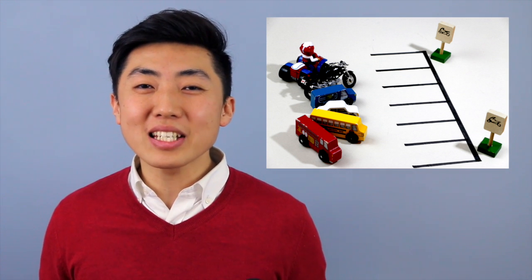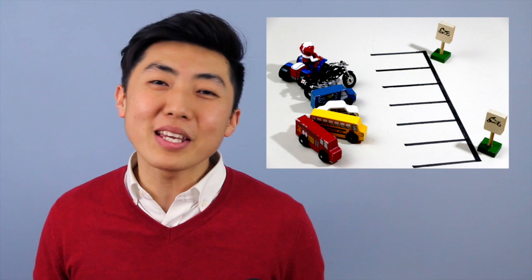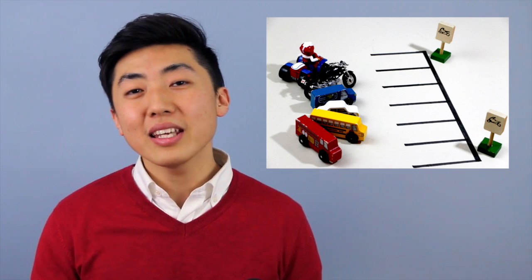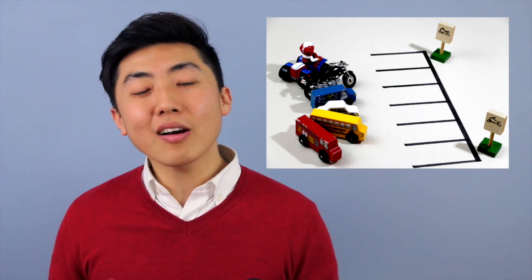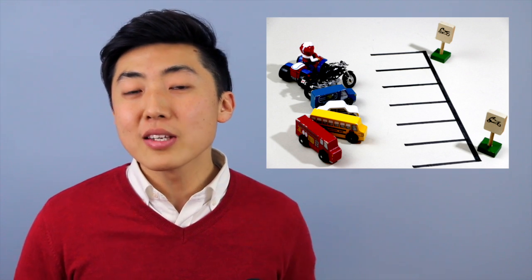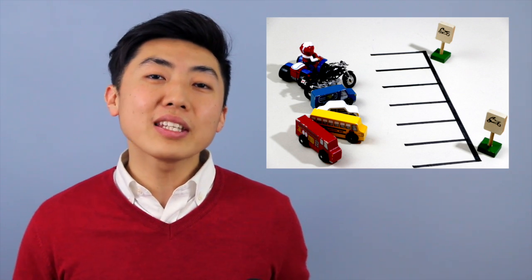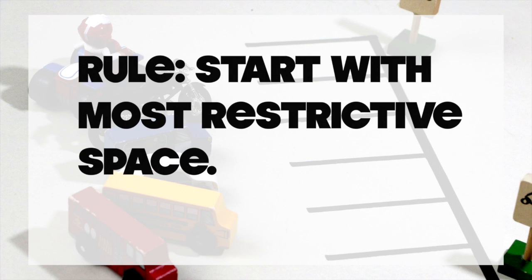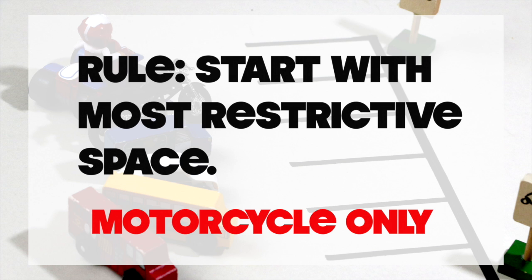So the thing in this situation is that the motorcycles have to be in the motorcycle only spots. Now, could they park in the car spot? They could. But you see, the cars can't park in the motorcycle only. It might only be a half size spot. So because of that, we have to deal with the motorcycles first. So our rule with this is that we start with the most restrictive space possible. In this case, our most restrictive space is the motorcycle only parking space. So let's park the motorcycles first.